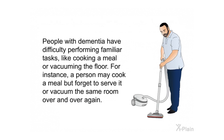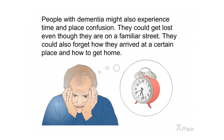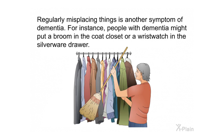People with dementia have difficulty performing familiar tasks like cooking a meal or vacuuming the floor. For instance, a person may cook a meal but forget to serve it, or vacuum the same room over and over again. They might also experience time and place confusion — getting lost on a familiar street or forgetting how they arrived somewhere and how to get home. Regularly misplacing things is another symptom, such as putting a broom in the coat closet or a wristwatch in the silverware drawer.